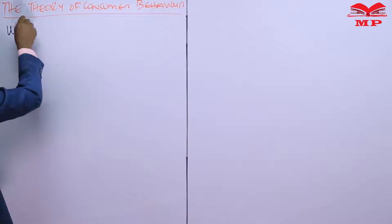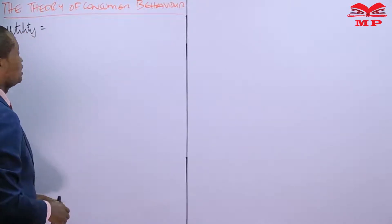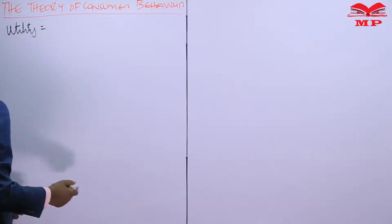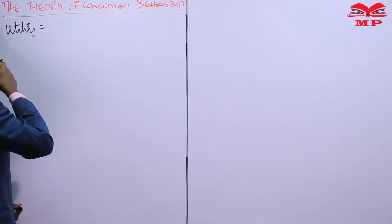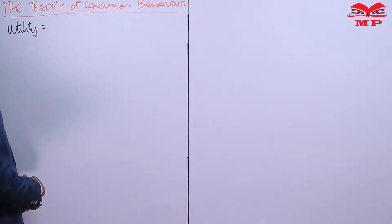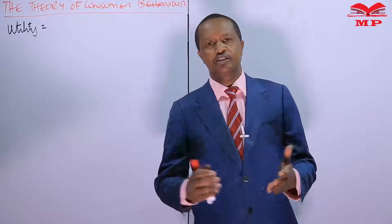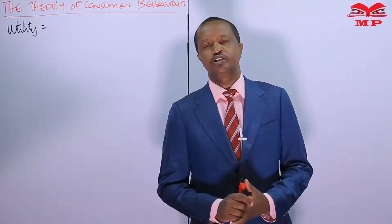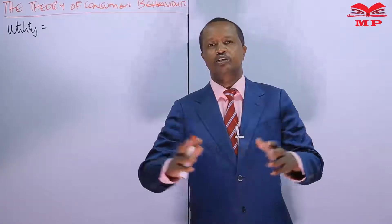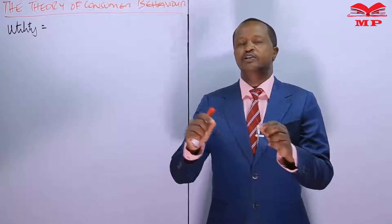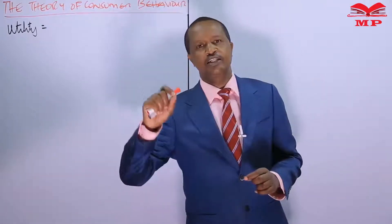In our last lesson, we defined utility as the ability of a commodity to satisfy a human want. We discussed the various approaches to consumer behavior — the cardinal approach — and covered the sub-topic of marginal utility analysis. We defined total utility and marginal utility, illustrated by drinking juice, noting that marginal utility is the additional satisfaction derived from consuming additional units of the same commodity.